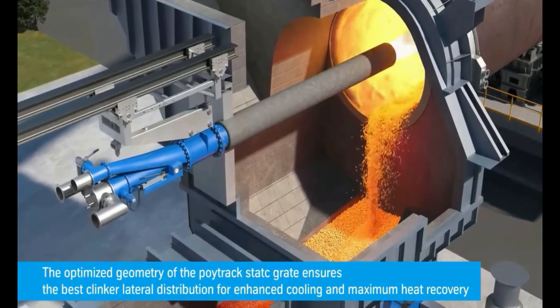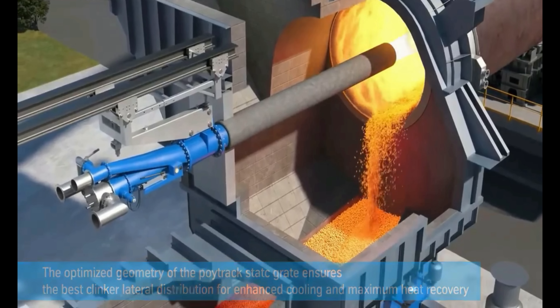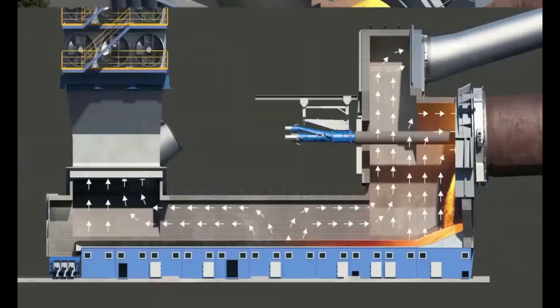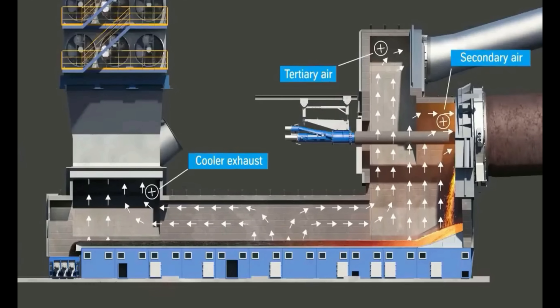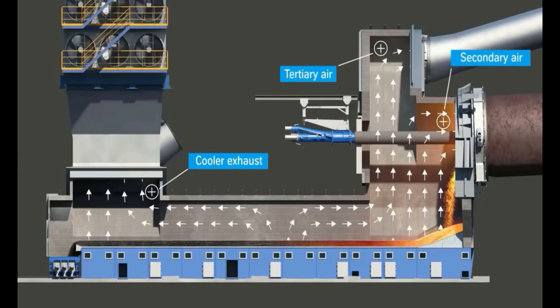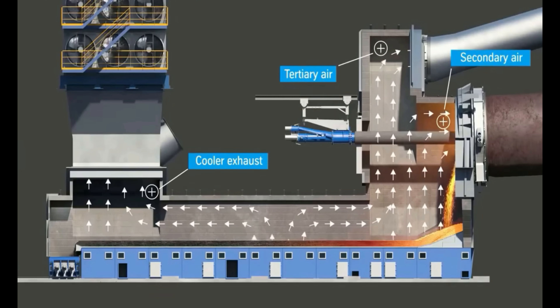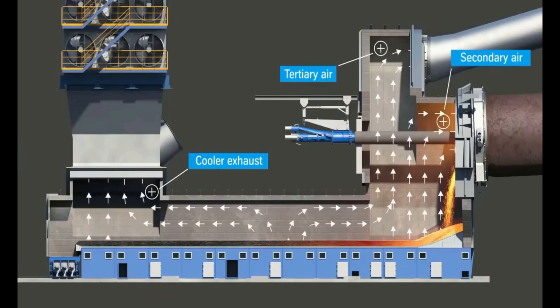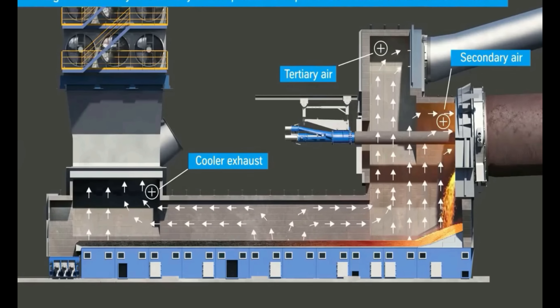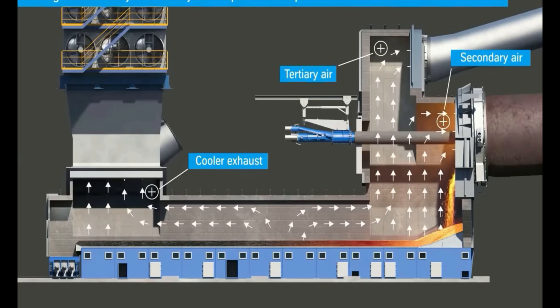The clinker is discharged from the kiln and passes through a clinker cooler, where air is blown through it to reduce its temperature. Cooling the clinker is important to maintain its quality and prevent the formation of undesirable crystal formations.